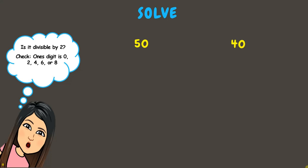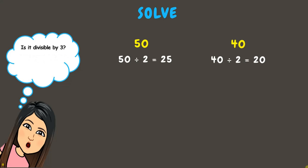Let's get the other factors by dividing them by 2. Next, divisibility by 3: check if the sum of the digits is divisible by 3. For 50, 5 plus 0 equals 5, which is not divisible by 3. For 40, 4 plus 0 equals 4, which is also not divisible by 3.